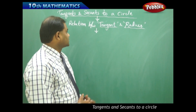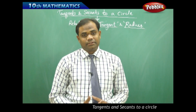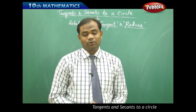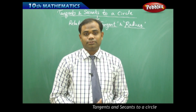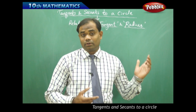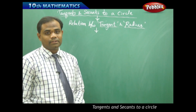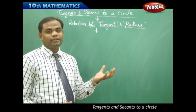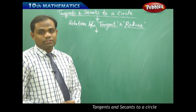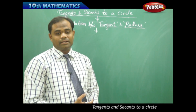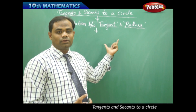Now let's see a theorem which connects the relation between the tangent and radius. The tangent and radius are always said to be connected because they are very much associated geometrically. So let's identify the relation between the tangent of a circle and the radius of that particular circle, and prove it through a theorem.